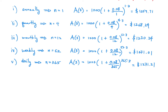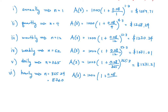For part six, hourly. That gives us n equal to 365 times 24 because there are 24 hours in a day, which gives us 8,760. So after three years, we're going to have 1,000 times 1 plus 0.08 divided by 8,760, all raised to 8,760 times 3. Evaluating that in our calculator gives us $1,271.25.